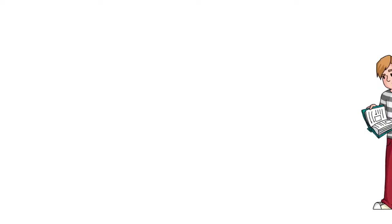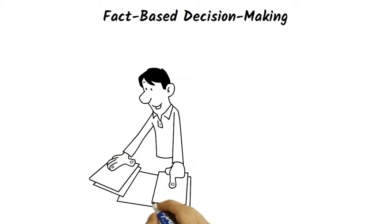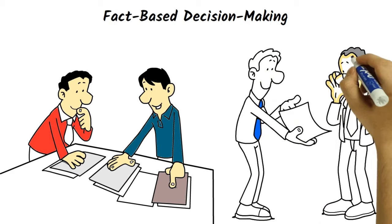Now, let us discuss the last one which is fact-based decision making. In this section, all the decisions which are taken by company authority are based on fact and theories. It is not taken by assumption. So, this is also a very common important step.